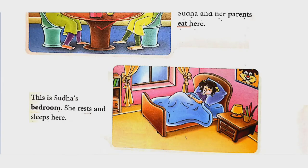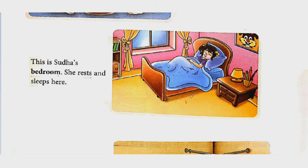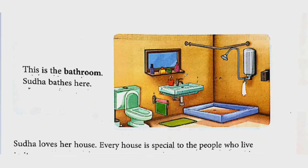See the next room — this is Sudha's bedroom. Yeh kya hai? Sudha ki bedroom hai. Yahan pe ek bed hai aur woh so rahi hai. This is called a bedroom — she rests and sleeps here. Woh kya karti hai bedroom mein? Aaram karti hai aur soti hai. See the next picture — this is the bathroom. Sudha baths here. Yahan pe sink hai, shower hai — this is the bathroom.